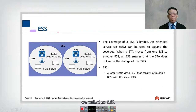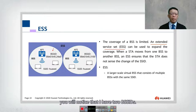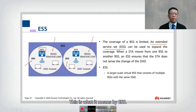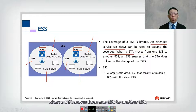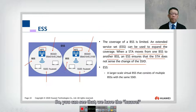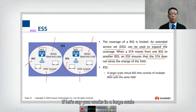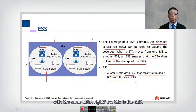We also have another term called ESS, or Extended Service Set. Looking at the diagram, there are two BSSIDs — two BSS, meaning two access points. ESS allows roaming: if you have two access points with the same SSID, an ESS ensures that when a station moves from one BSS to another, it does not sense the change of the SSID. So both APs broadcast the same SSID, such as 'Huawei', and the client roams seamlessly. ESS is very important in large-scale environments, consisting of multiple BSS with the same SSID.